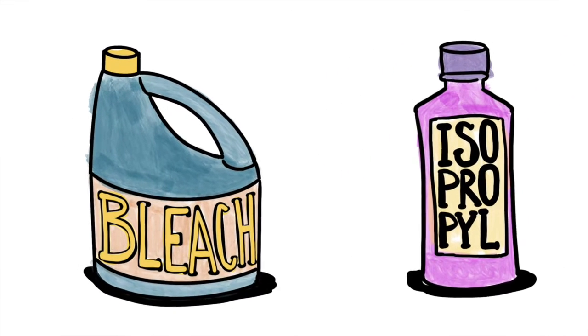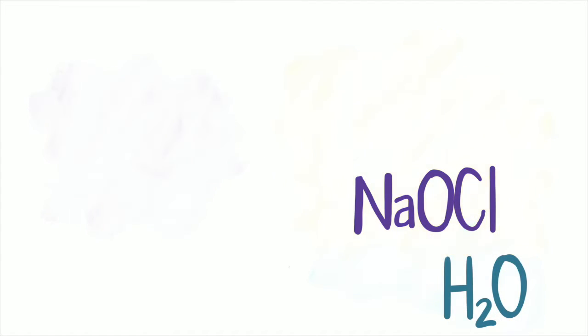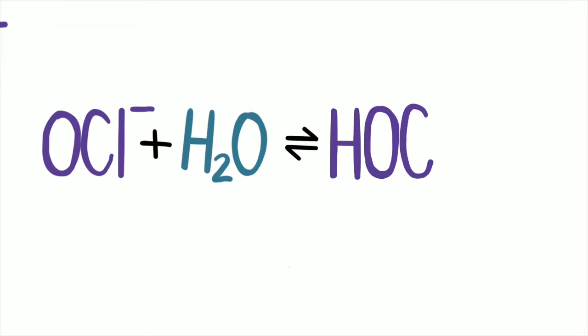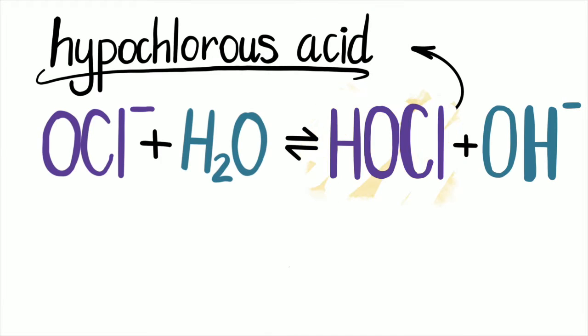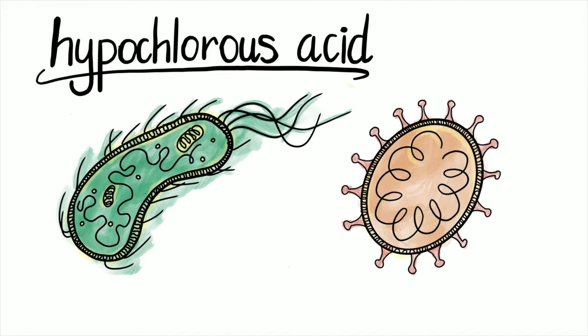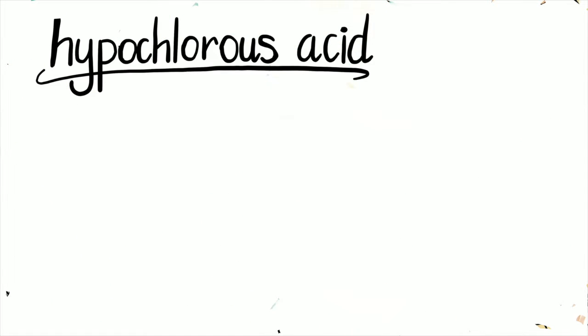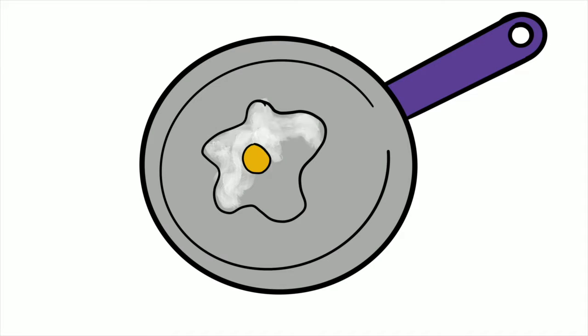What is bleach, and why can its improper use cause health problems? Chlorine bleach is a solution of sodium hypochlorite in water. This solution forms hypochlorous acid, an oxidizing agent that attacks and destroys molecules in bacteria and viruses. Recent work has shown that hypochlorous acid causes the proteins in bacteria to unfold — a process called denaturing — the same process as frying an egg and seeing that liquid egg white turn into a solid.